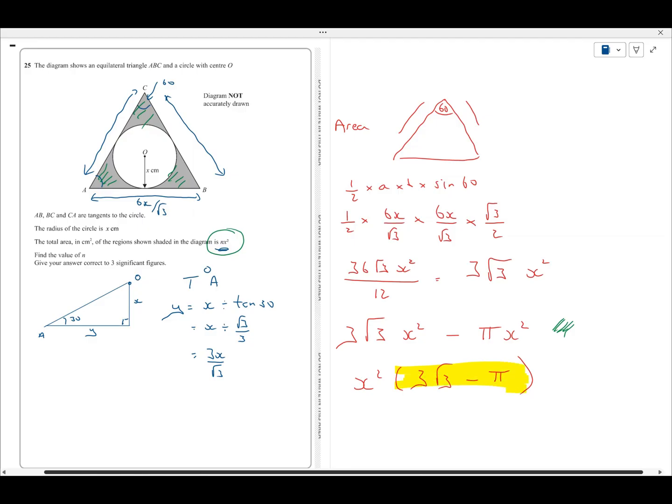So, on my calculator, 3 times root 3 equals minus shift pi equals. And I get the answer 2.0545 and so on. And so, to 3 significant figures, n equals 2.05.